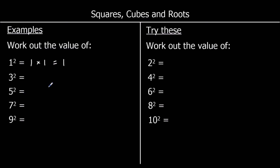3 squared is 3 times 3, and 3 threes are 9. 5 squared means 5 times 5, and 5 times 5 is 25. 7 squared is 7 times 7, and 7 sevens are 49. And 9 squared means 9 times 9, and 9 times 9 is 81.